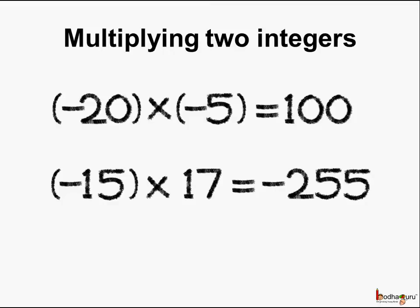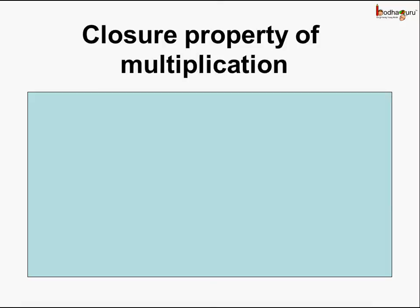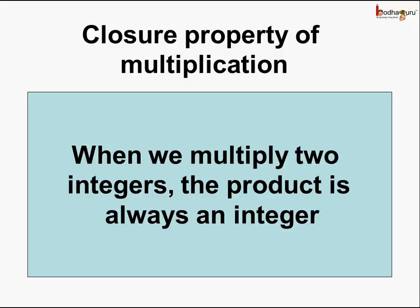What do we see? In both the cases we get the answer which is an integer. So the product is always an integer when we multiply two or more integers. This is called the closure property of multiplication — when we multiply two integers, the product is always an integer.